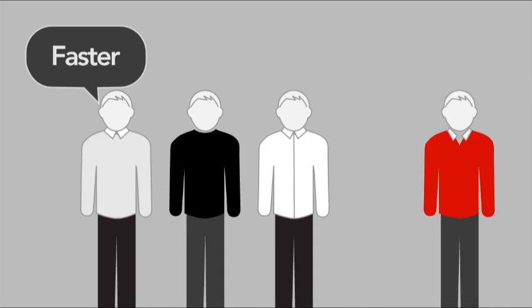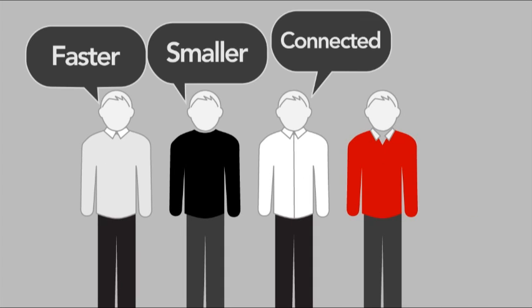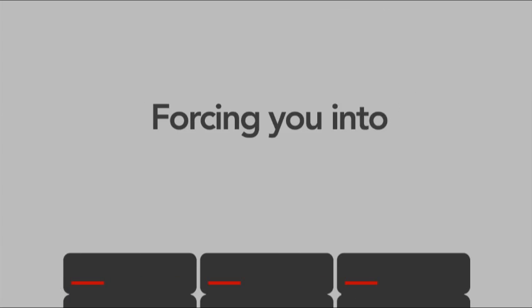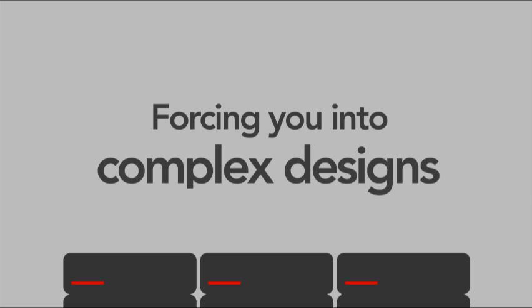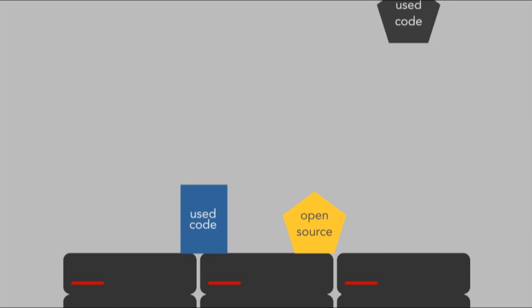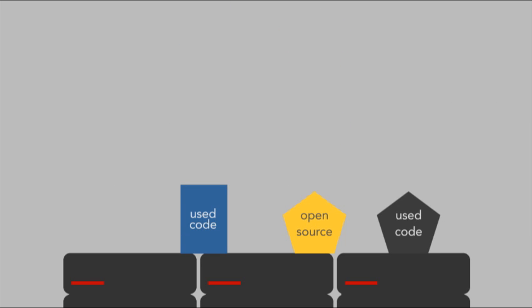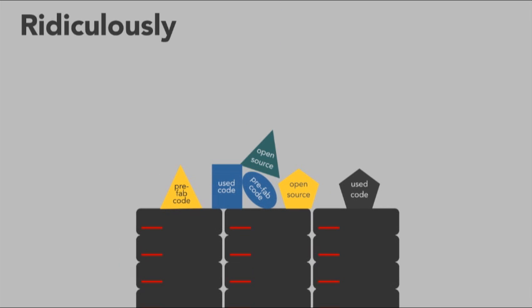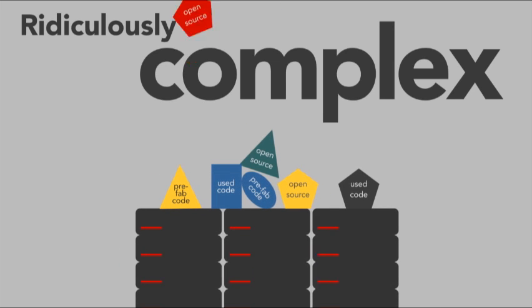But today your customers want faster, smaller, connected products that use less power, forcing you into complex designs. To keep up, you've resorted to prefab code pieces, open source, partner integrations, and reusing old code that your grandfather wrote. Your software is now ridiculously complex and you're struggling to keep up.